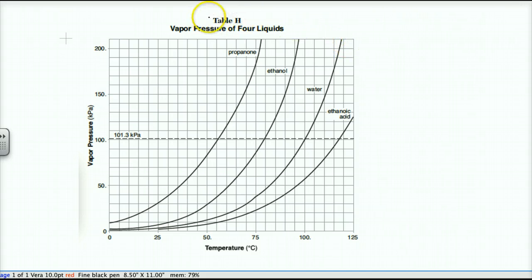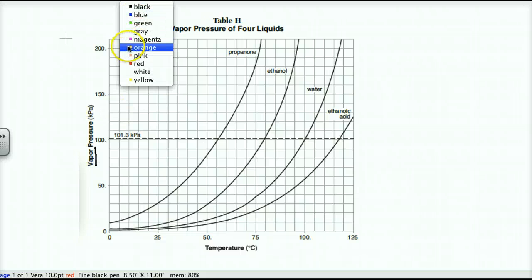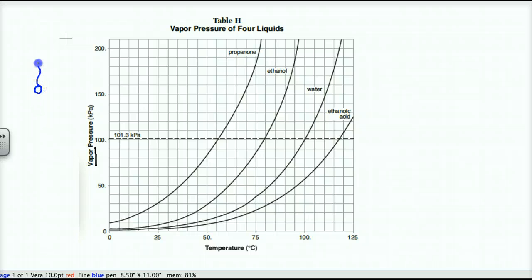Table H is a table that tells us how liquids differ in terms of their vapor pressure. Vapor pressure is essentially a word that describes the force due to liquid molecules escaping into the gas phase. They're able to escape into the gas phase because they can overcome the attractive forces between themselves, called intermolecular attractions.